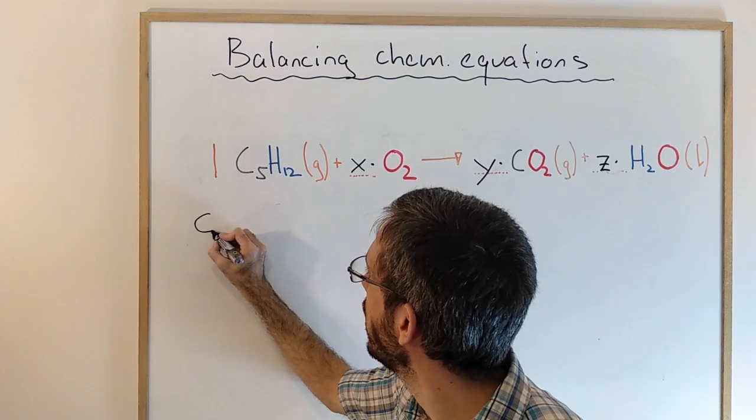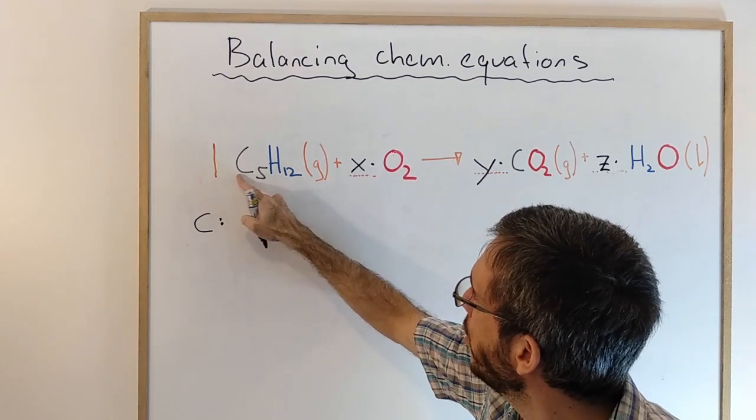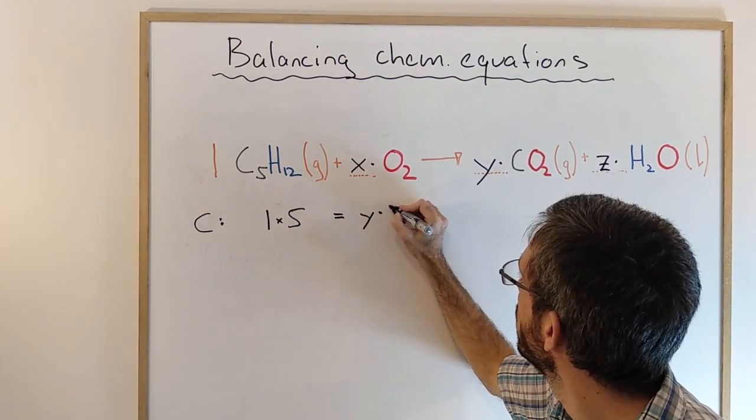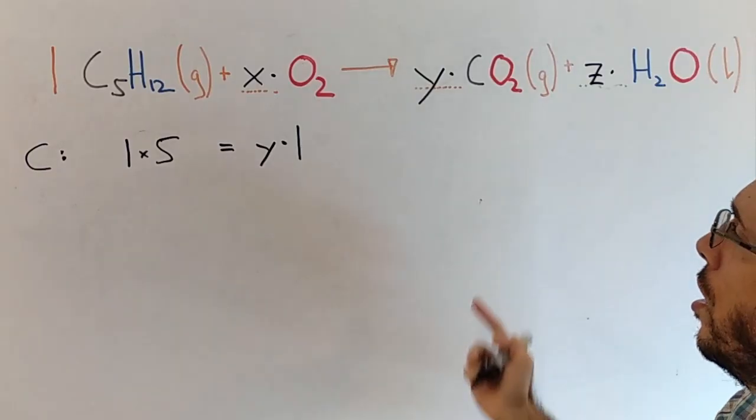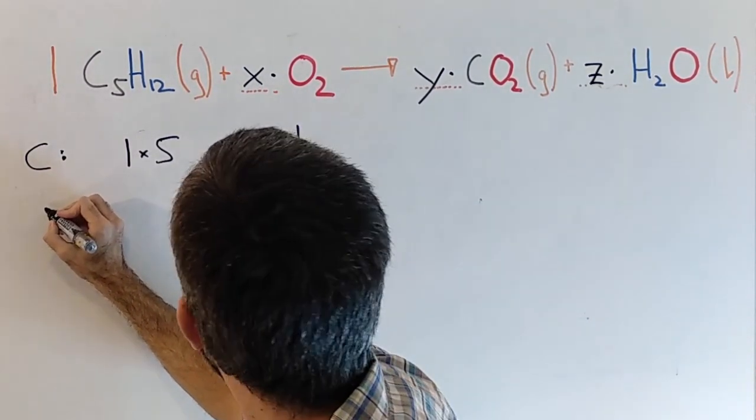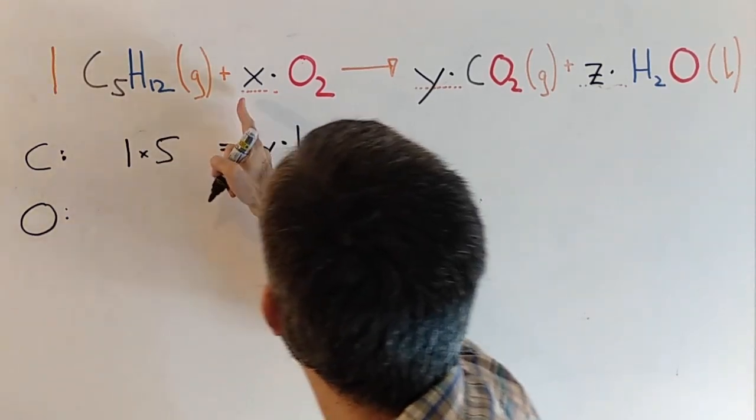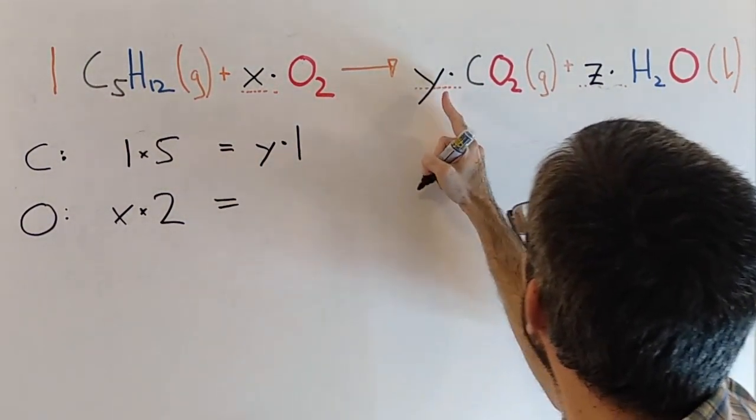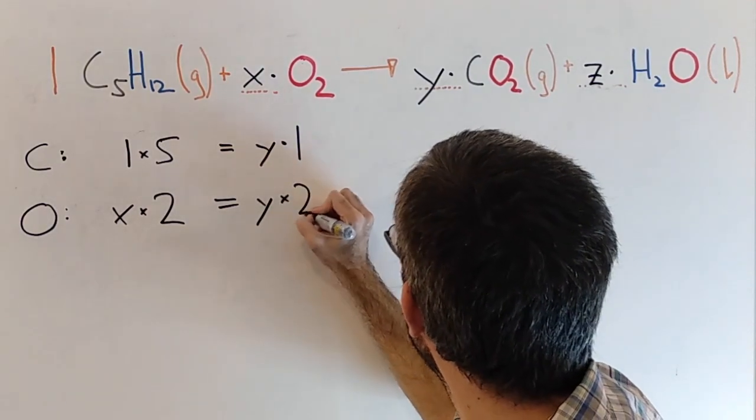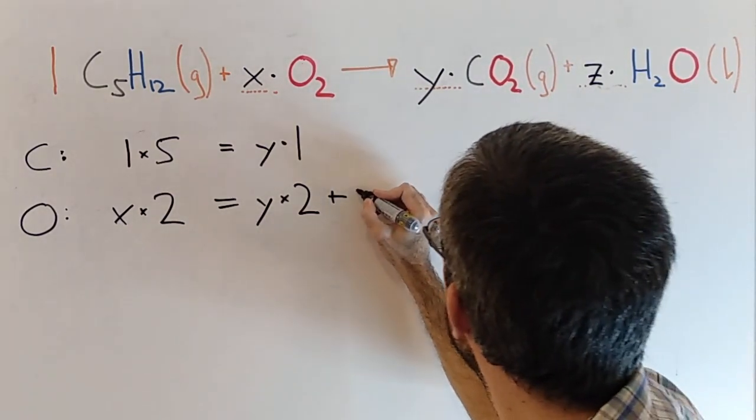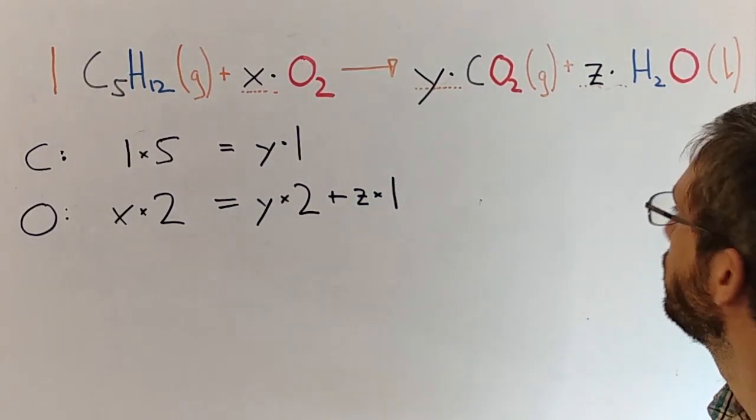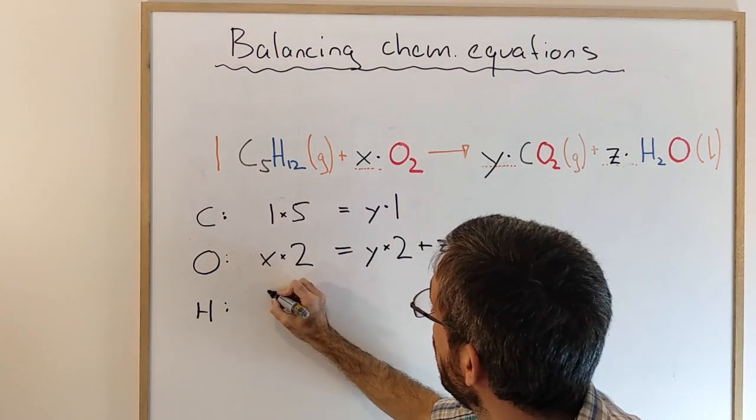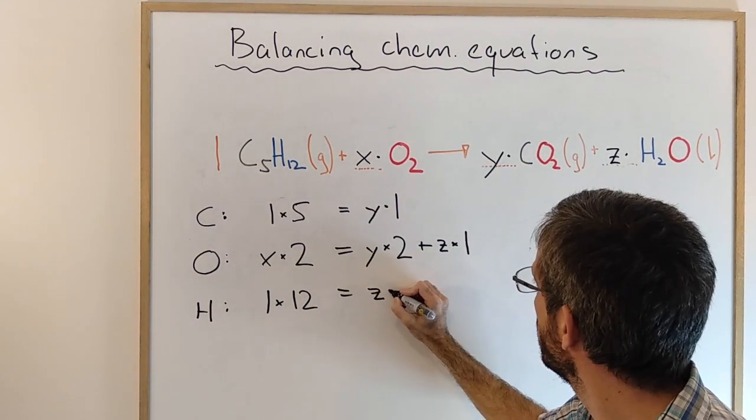The first equation I am going to get from my carbon. I know that 1 times 5 carbons must be equal to y times 1 carbon. Then I have the same on both sides. The second equation I can get from oxygen: x times 2 oxygen is equal to y times 2 oxygen plus z times 1 oxygen. Last equation is from my third element, hydrogen. How many hydrogen I have on the left? I have 1 times 12. And on the right, I have unknown z times 2.